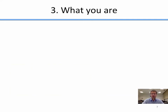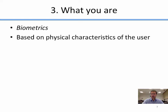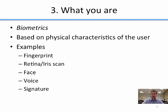The third factor of authentication is what you are, and the key word here is biometrics — based on the physical characteristics of users that they presumably can't fake. Classic examples include fingerprints; retina or iris scans, which scan different parts of your eye; your face, which is surprisingly unique and is the biometric that human beings use to authenticate each other; voice; and signature, which is a traditional way we've authenticated people in the financial industry, matching a signed check against the one on file.